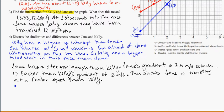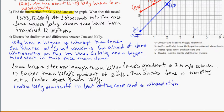I notice Kelly starts off in the lead of the race, and is ahead of Jane until, what's my intersection? at 3.3 seconds until 3.33 seconds, where Jane catches up to her, and passes her.